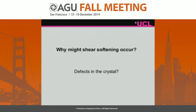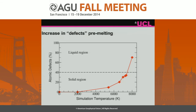Why does this shear softening occur? Could it be due to defects in the crystal? In the context of ab initio molecular dynamics simulations, we're talking about over- and under-coordinated iron atoms by about 20%. These atomic defects increase dramatically with temperature until they're about 40% when the material melts.